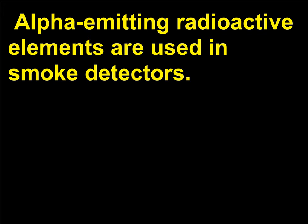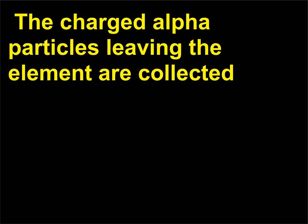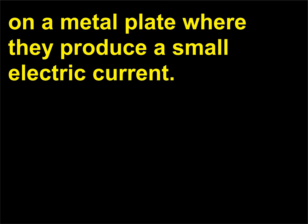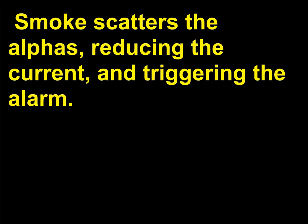Alpha-emitting radioactive elements are used in smoke detectors. The charged alpha particles leaving the element are collected on a metal plate where they produce a small electric current. Smoke scatters the alphas, reducing the current and triggering the alarm.